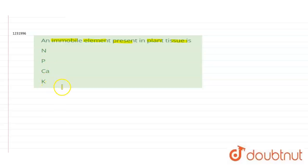So first of all, we will see what exactly are immobile elements. Immobile elements do not move. They are not transported in plants and they get accumulated at the absorbed site. It means they do not participate in translocation because they are immobile.